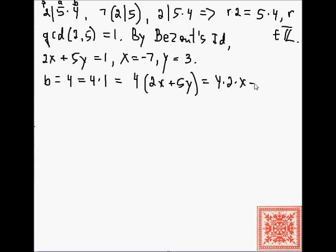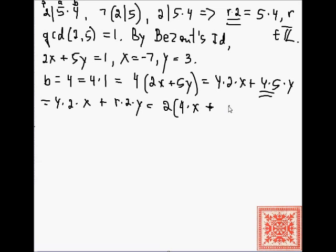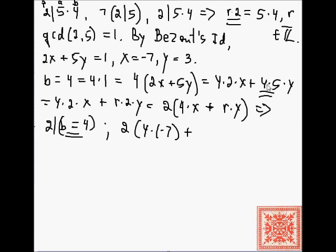Multiplying it out: 4 times 2 times x plus 4 times 5 times y. And 4 times 5 is equal to r times 2, so 4 times 2 times x plus r times 2 times y. We're going to factor 2 out: 2 times (4x plus ry). So, 2 divides b, which is equal to 4. That's sort of obvious, but that's an example of applying Euclid's first theorem. If we plug in x minus 7 and y equal to 3, then we're going to get 2 times 2 equals 4.